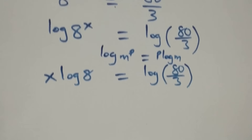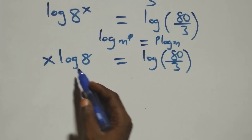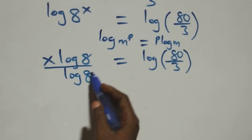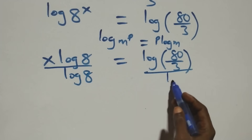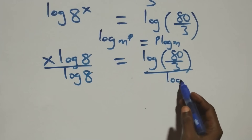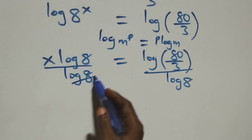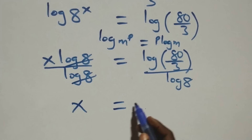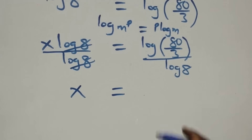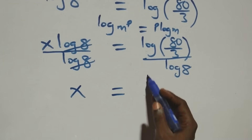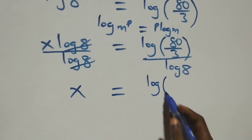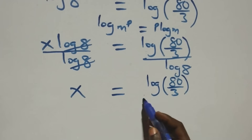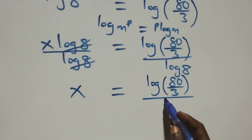The next step: we divide both sides by log 8. That is, we divide this side by log 8 and also divide that side by log 8. This means log 8 cancels with each other and we have x left, which equals log(80/3) divided by log 8.